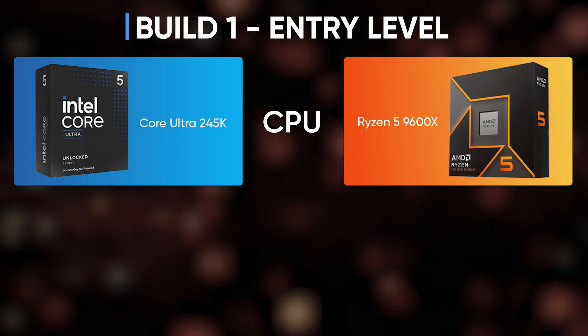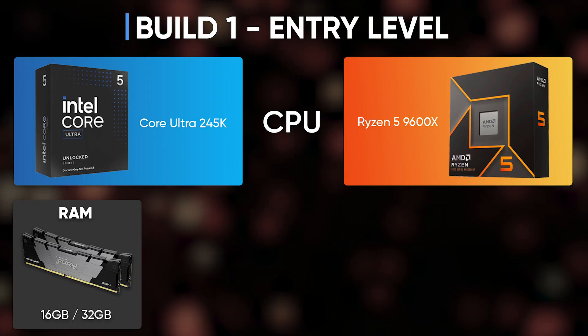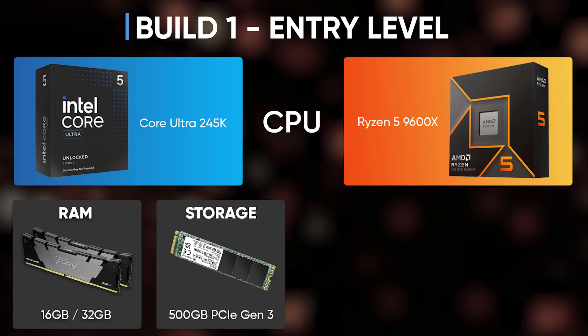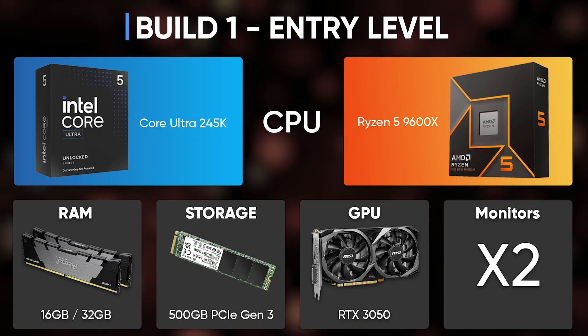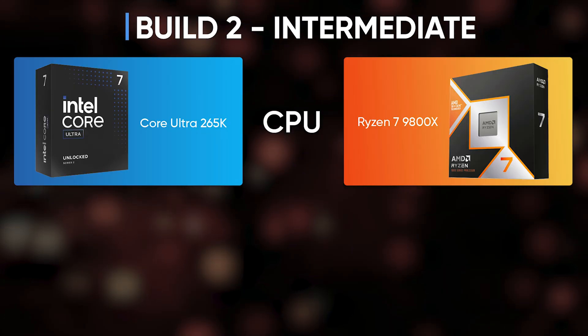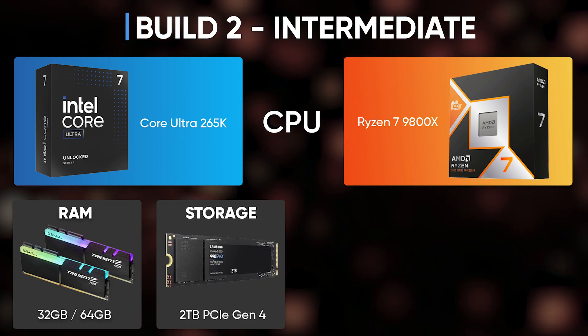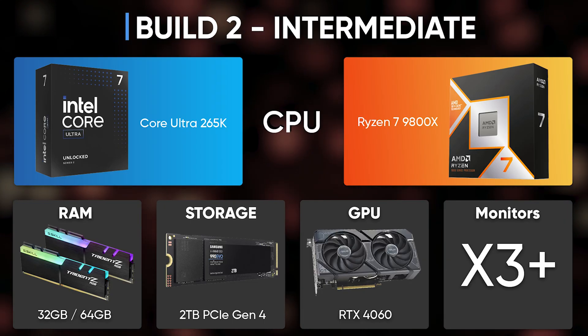Now onto the build tiers. For beginner or entry level: the most recent Intel Core i5 or Ryzen 5, 16 to 32GB of RAM depending on budget, an NVMe SSD, and you can start with an RTX 3050. Two monitors should suffice. For intermediate: an Intel Core i7 or Ryzen 7, 32 to 64GB of RAM, 2TB NVMe, and an RTX 4060 or 5060, which handles 3 to 4 monitors.